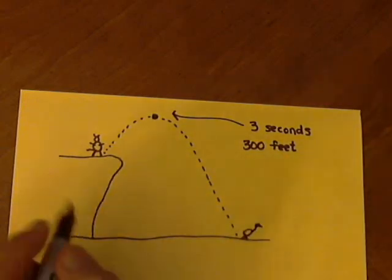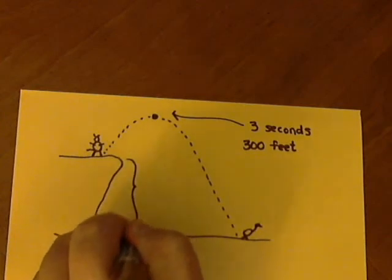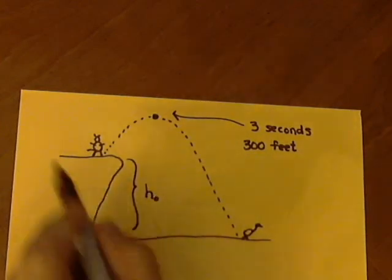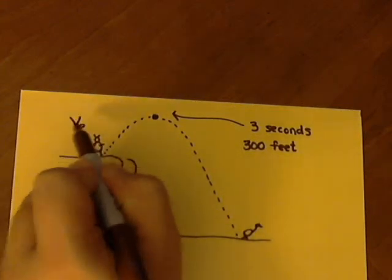So what we want to do is we want to use that to figure out how high the cliff is. That would be the initial height. And we'd also like to know how fast he's taking off, so that would be the initial velocity.